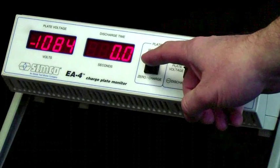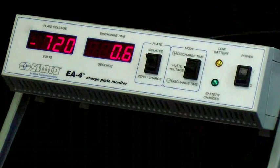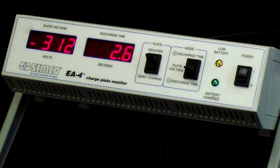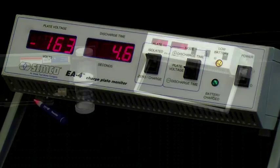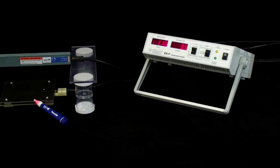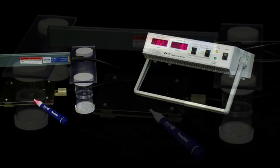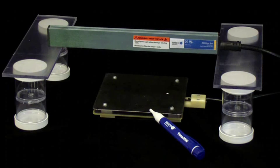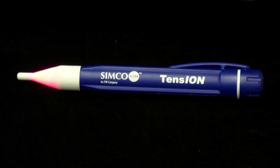To create ionization, we place a static bar over the top of the CPM and power on. The ionization created neutralizes the charge on the CPM. The tension is a device used to detect high voltage only.